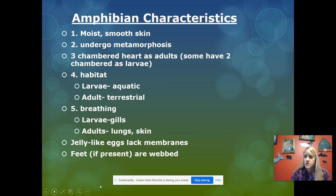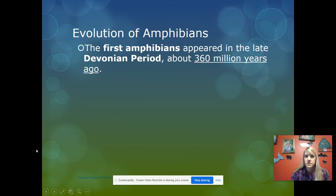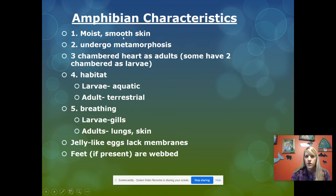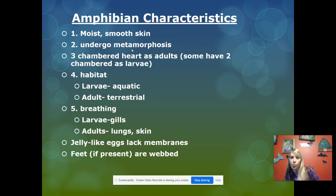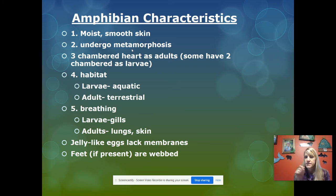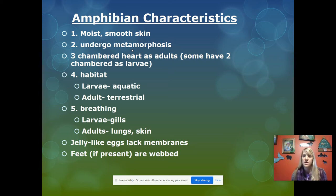The characteristics you need to know about amphibians: they have moist, smooth skin. They undergo metamorphosis — their larvae live in the water, like a tadpole, and then change appearance so they can live on land. For example, a tadpole has a tail but a frog does not.